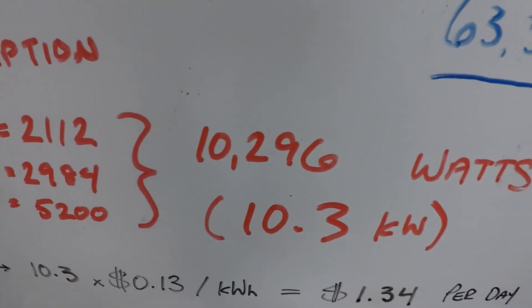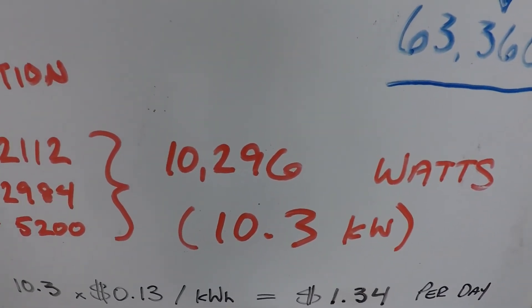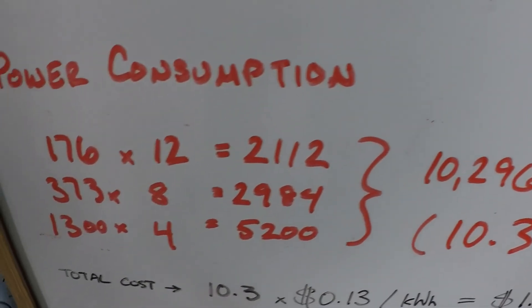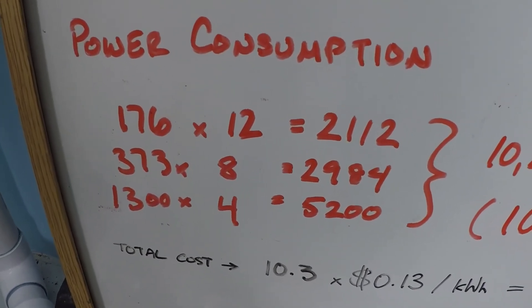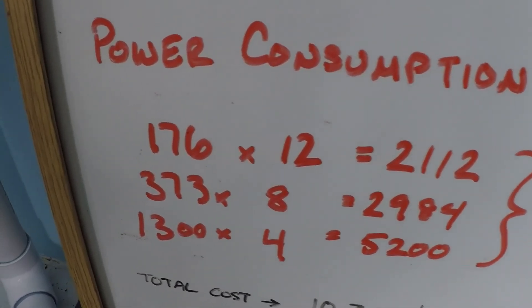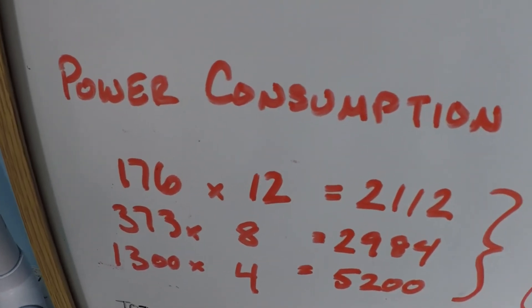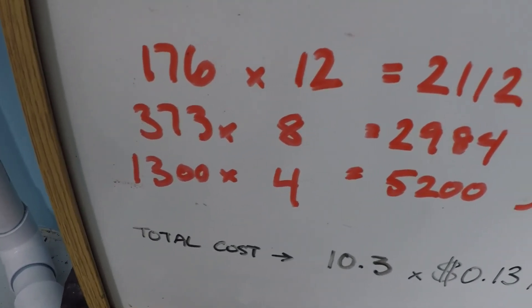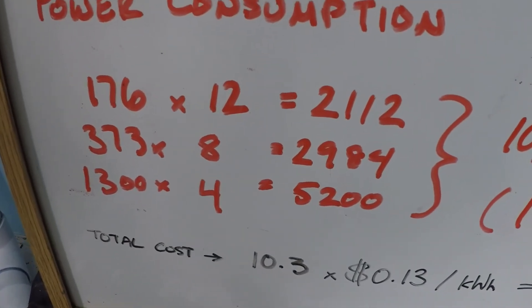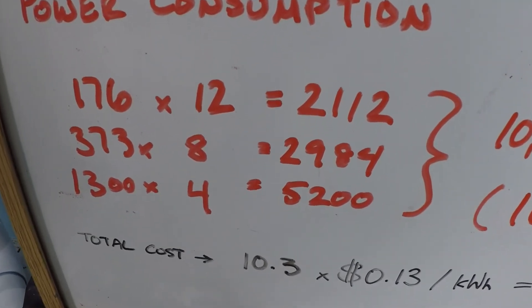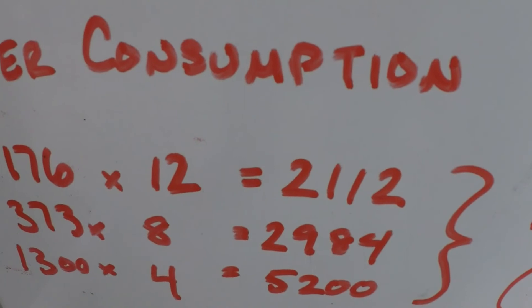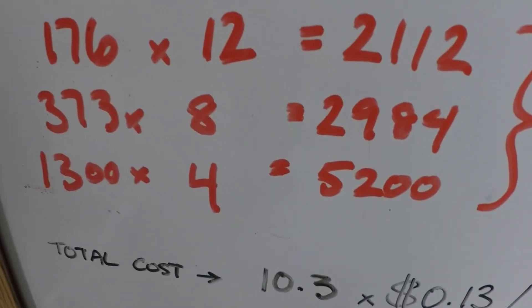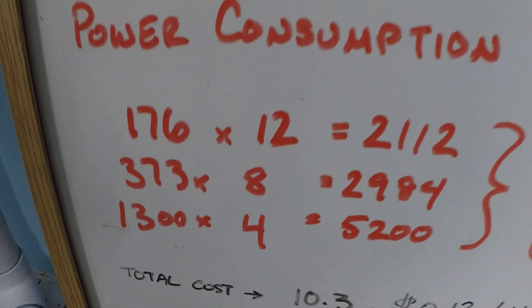So our grand total here is 10,296 watts, or rounded up 10.3 kilowatts of power consumption. Looking at these numbers here you can see that the low speed operation for 12 hours only consumed 2100 watts of power. The four hours at high speed consumed 5200. That's actually quite a discrepancy.